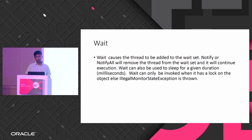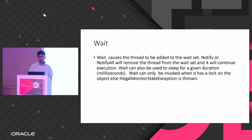If a thread is currently in a wait state and the caller method calls interrupt, it will throw an IllegalMonitorStateException. Also, when you call wait, it must have the lock — you must be within a synchronized block — otherwise calling wait will throw an IllegalMonitorStateException.